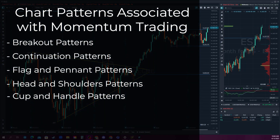Here are some common chart patterns associated with momentum trading. Breakout patterns occur when an asset's price breaks through a key level of support or resistance; traders often look for breakouts as a sign of strong momentum in the market. Continuation patterns occur when an asset's price pauses during an uptrend or downtrend before continuing in the same direction, providing traders with potential entry and exit points. Flag and pennant patterns occur when an asset's price consolidates after a strong price move before continuing in the same direction; traders often look for these patterns as a sign of strong momentum.